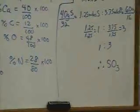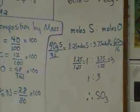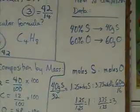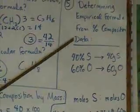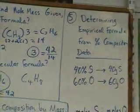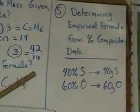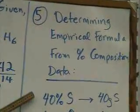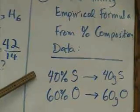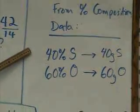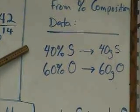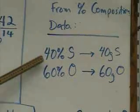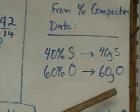Okay, final thing that you would be able to be asked to do might be to determine the empirical formula from percent composition data. And so how that would be done would be to take the percent composition data just given to you and make what we call the 100 gram assumption. And assume you have 100 grams of stuff, so 40% of 100 grams would be 40 grams of sulfur and 60 grams of oxygen.